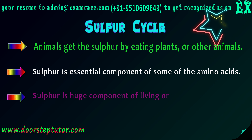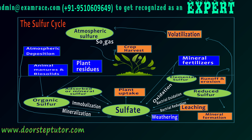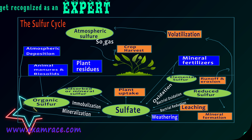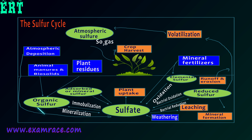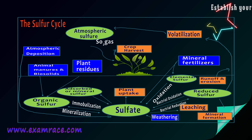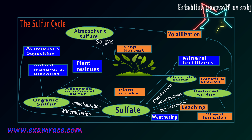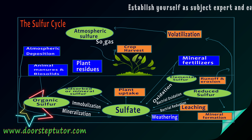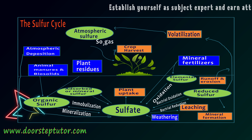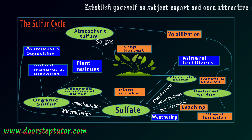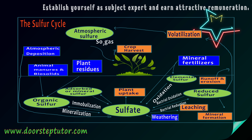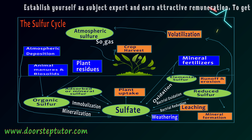Plants take in sulfur in the form of SO2 gas, and roots also take up sulfur in the form of sulfate (SO4²⁻). Animal manures and biosolids produce organic sulfur, which can mineralize to sulfate. This mineralized sulfate is further reduced to hydrogen sulfide (H2S). This H2S is a mineral form of sulfur that gets volatilized back to the atmosphere, completing the cycle.